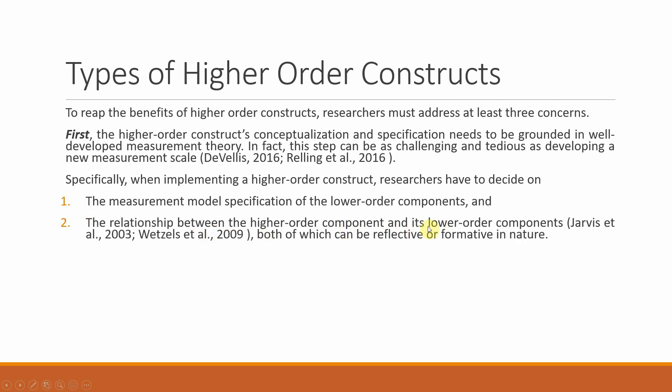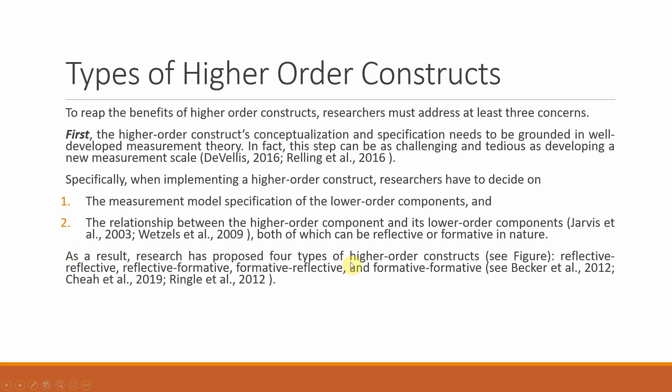The relationship between the higher order component and its lower order components can be reflective or formative, depending on the conceptualization of the scale. In existing research, CSR and its lower order components appear in both reflective-reflective and reflective-formative configurations, both published in good journals. Whichever you choose, you need theoretical justification. As a result, research has proposed four types of higher order constructs: reflective-reflective, reflective-formative, formative-reflective, and formative-formative.